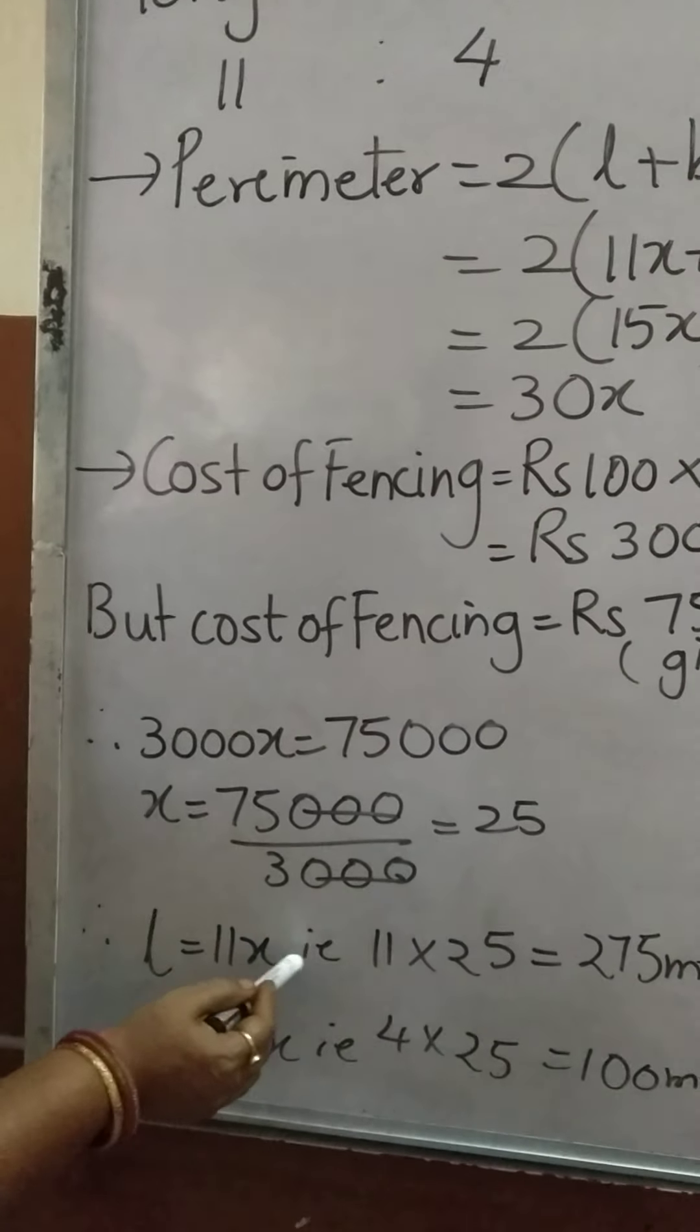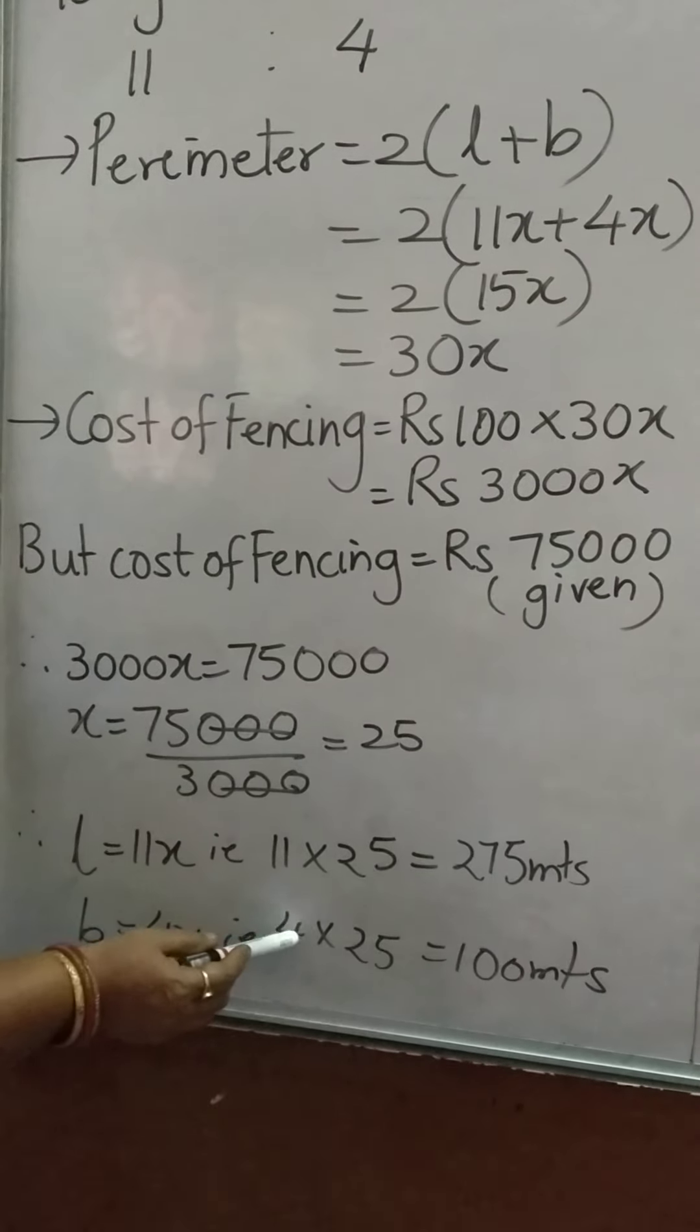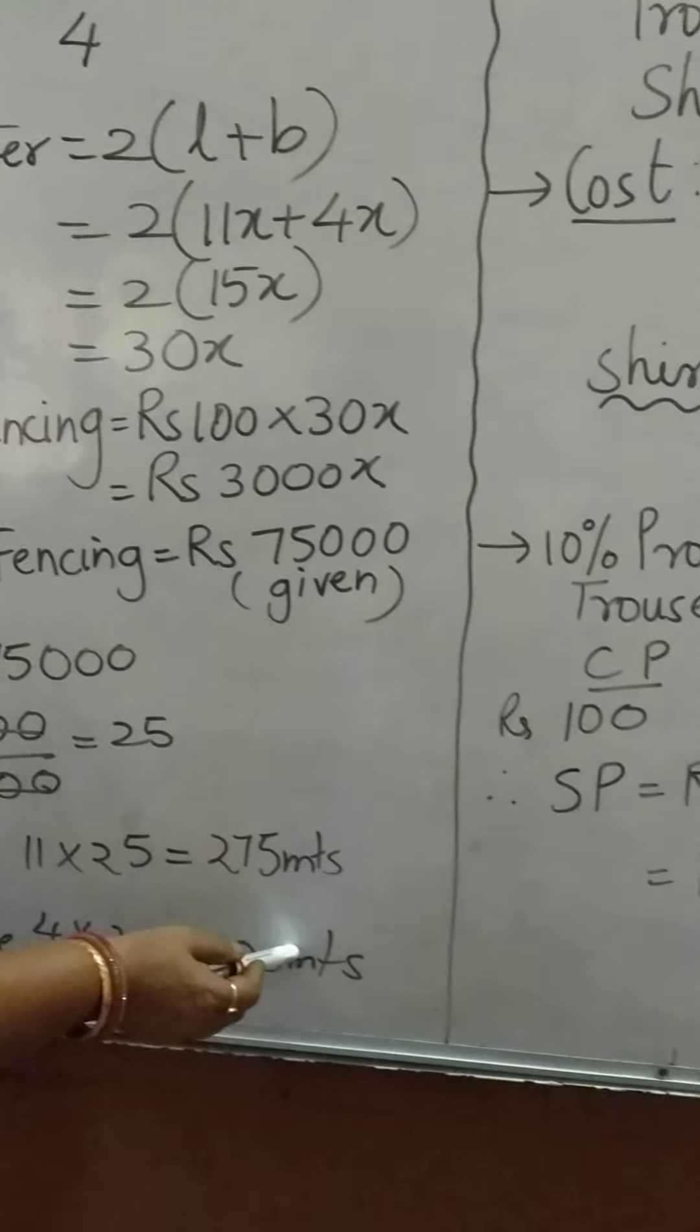So length will be 11x, 11 into 25 is 275 meters. Breadth is 4x, 4 into 25 is 100 meters. Clear?